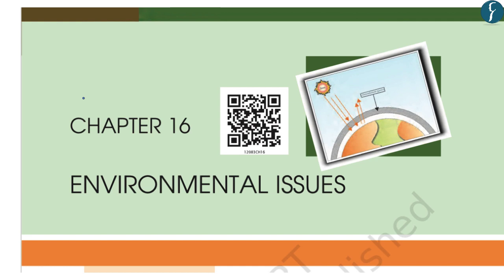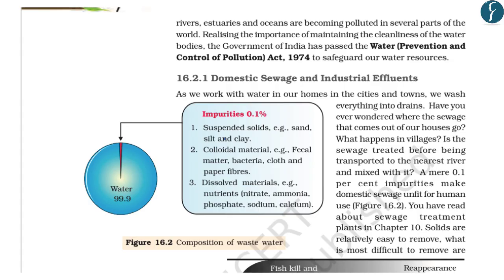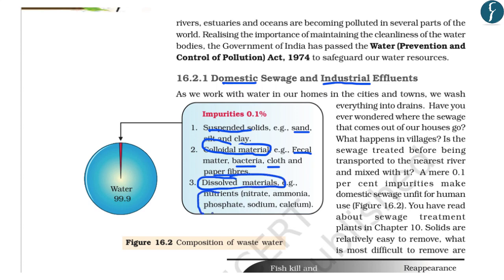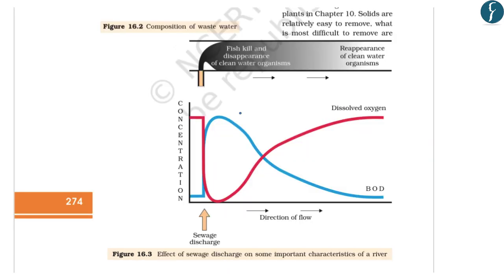In the Biology NCERT of class 12th, chapter 16, it discusses various environmental issues — particularly the impact of discharge of domestic sewage into water bodies. Domestic sewage and industrial effluents contain various impurities: suspended solids such as sand, silt, and clay; colloidal material including fecal matter, bacteria, cloth and paper fibers; and dissolved materials including nutrients like nitrate, ammonia, phosphate, sodium, and calcium.